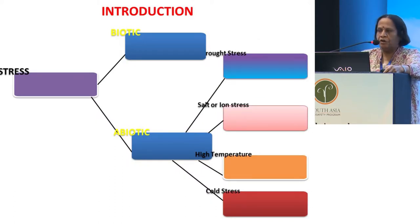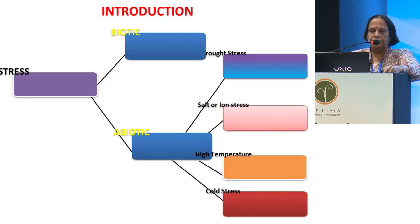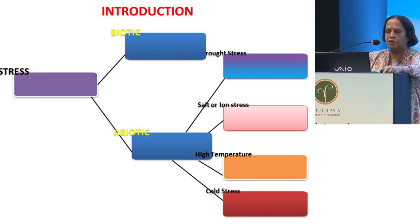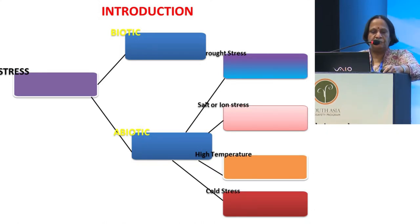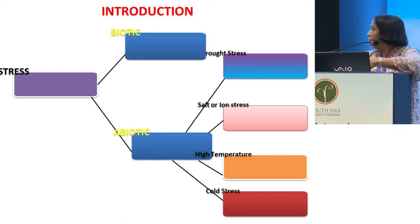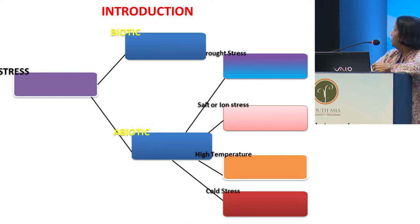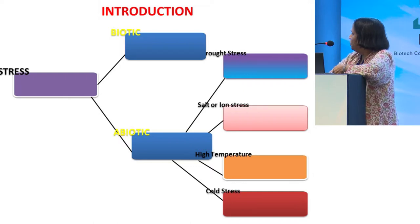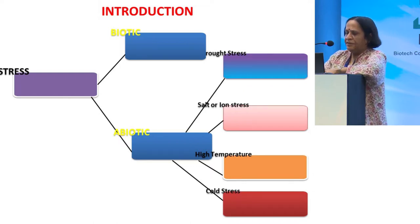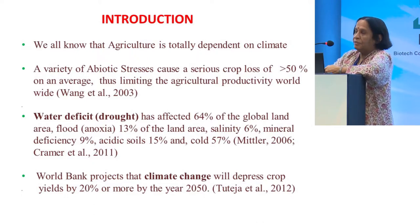When we talk about stress in plants, we talk about multiple kinds of stresses. The most flagrant one is biotic stress, which is not what I'm going to talk about. Abiotic stress itself can be of different types. My focus today will be on drought stress, but there are other kinds of abiotic stresses also, like salt or iron stress, and of course temperature-dependent stresses like high temperature and cold stress. Nature has itself evolved to tackle some of them.